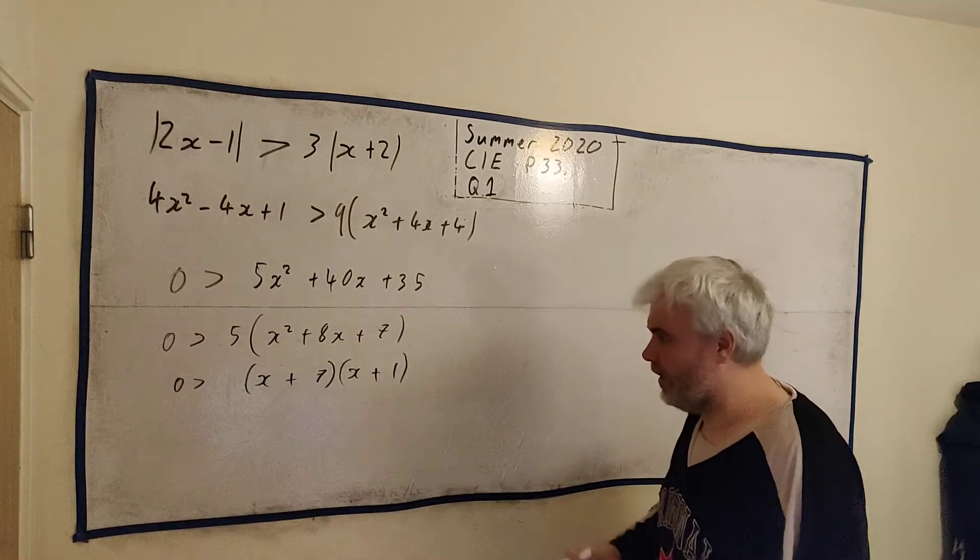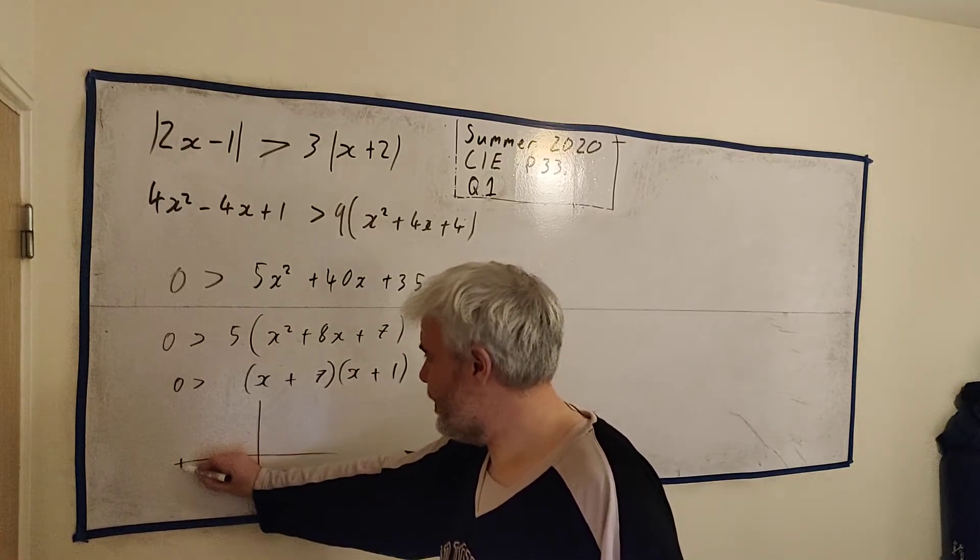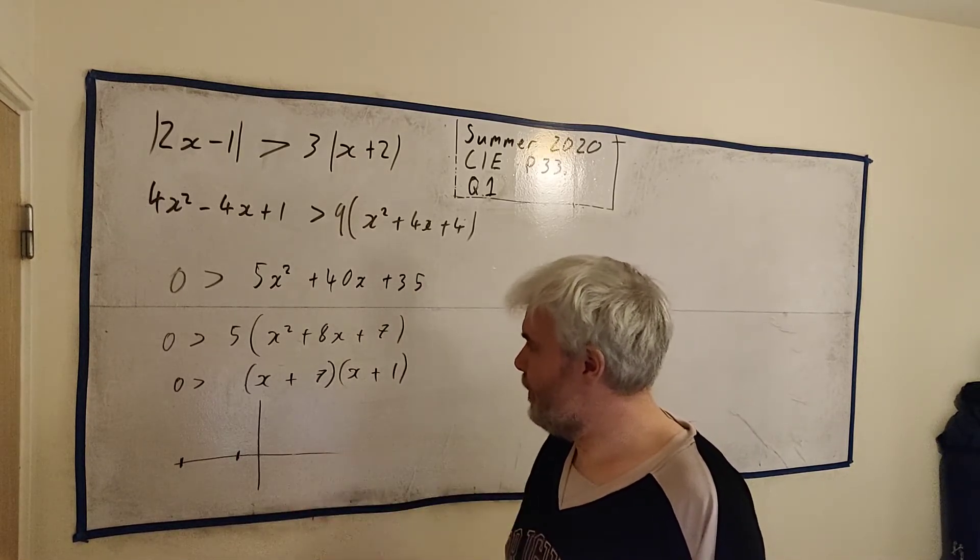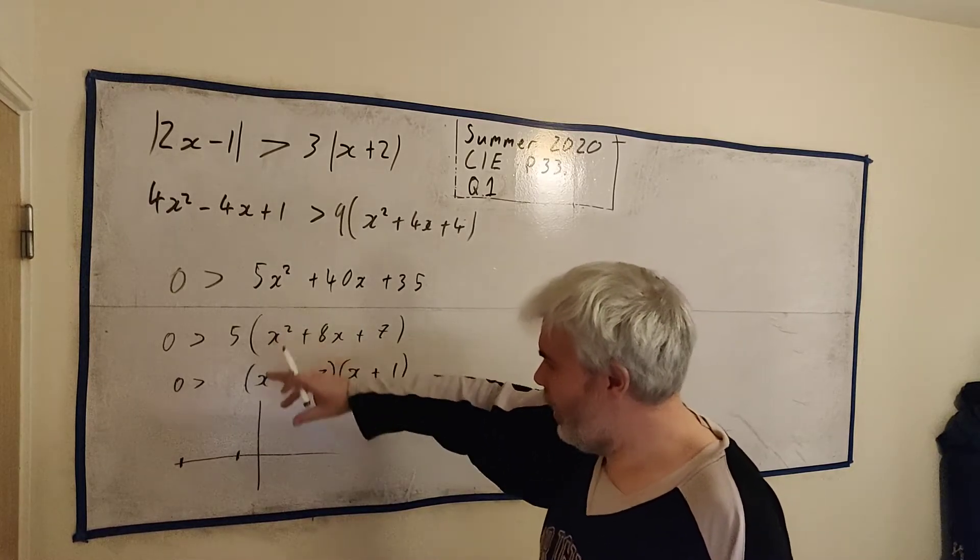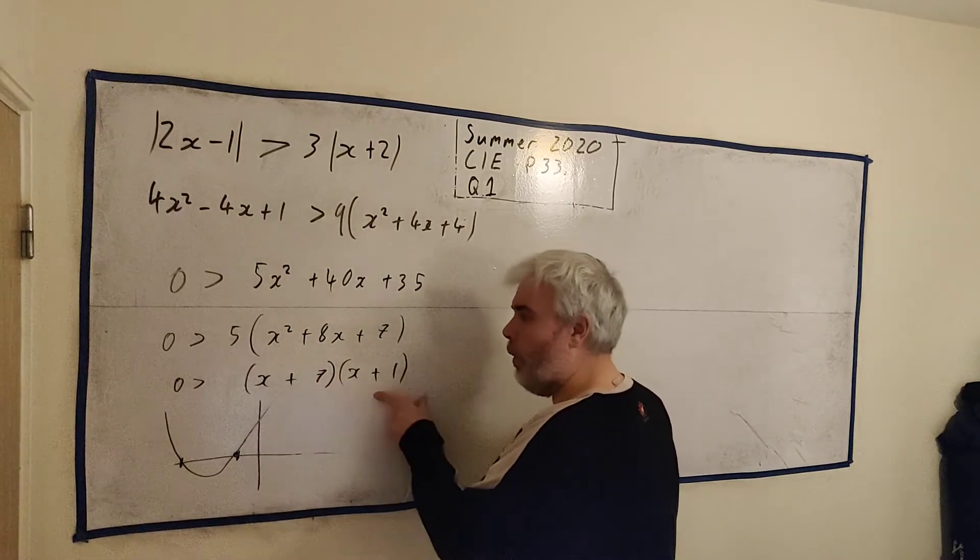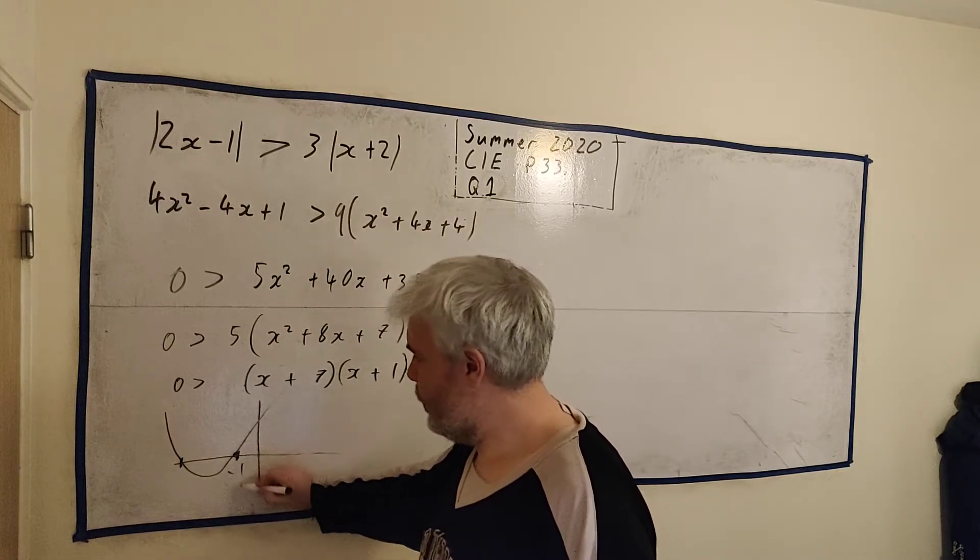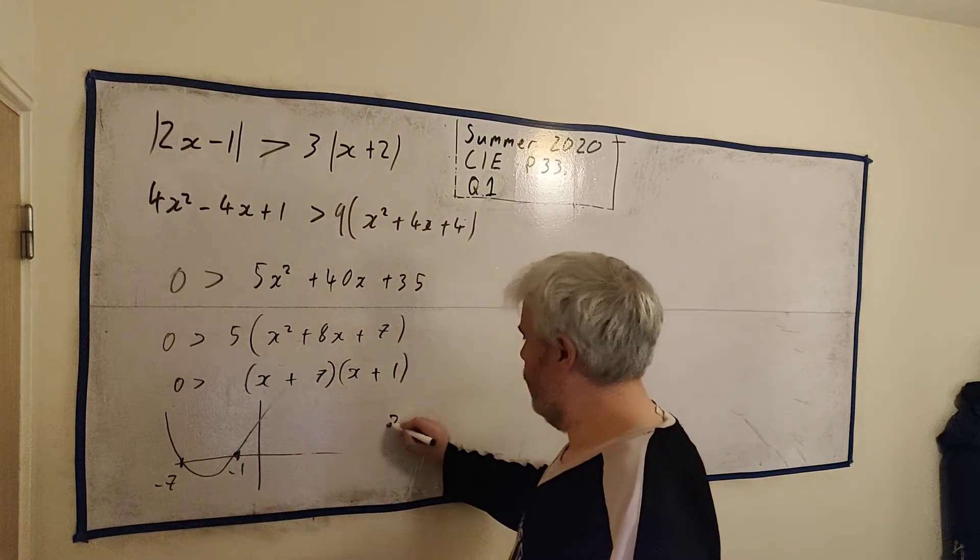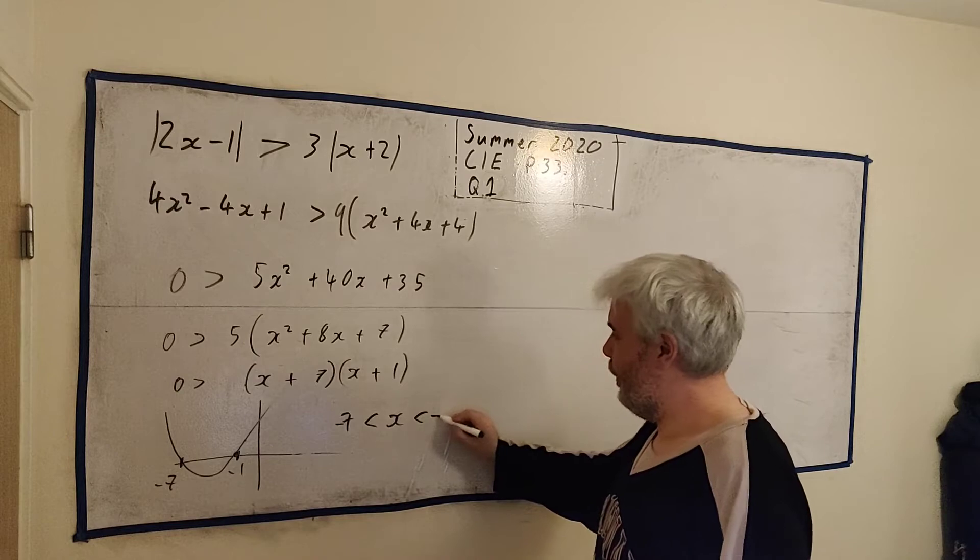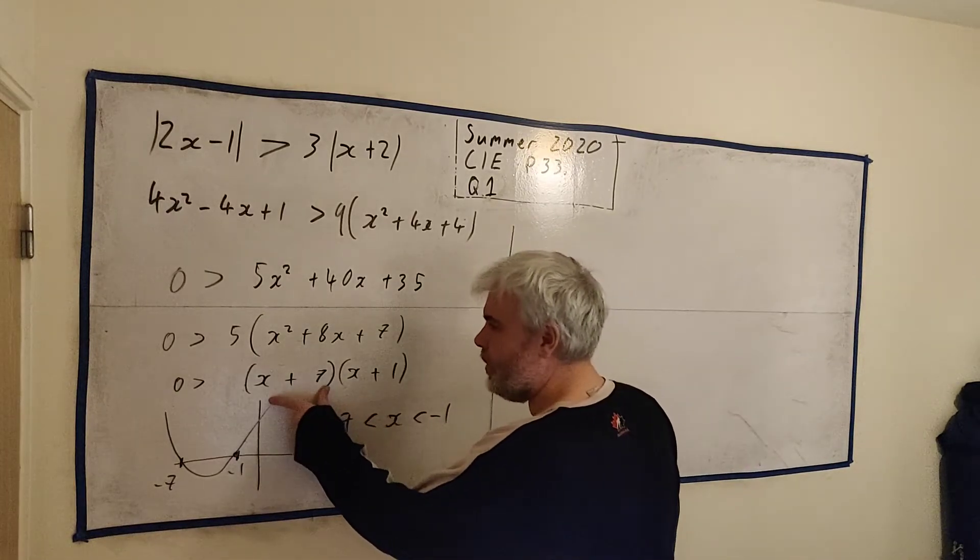And again one of them is graphically. I'll do the graphical one first because it's nice and quick. If we draw this it is minus 7 and minus 1. If you watched the first part you'd have expected that. And we have x squared, a positive quadratic. So it looks something like this. And remember what we're saying. When is this less than 0? Well it's less than 0 when x is between these two numbers. Minus 1 and minus 7. So x is bigger than minus 7 and less than minus 1.